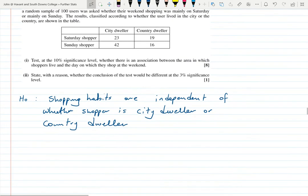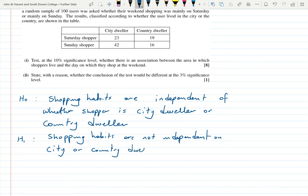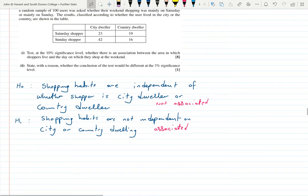H1 is that shopping habits are not independent of city or country dwelling. If you're using the word associated, it goes the other way - you would say are not associated using this one, and you would use the word associated in this one. I must admit in the new syllabuses for OCR A I am seeing the word independent more frequently than associated.